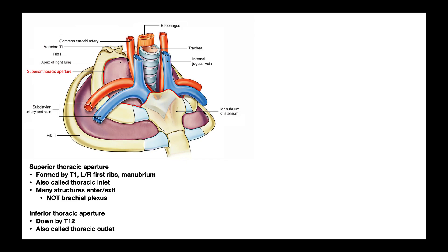Posteriorally, it's the body of the T1 vertebra. Laterally we have the first ribs on either side — this one would be the patient's right first rib — and then basically the top of the sternum, which is the manubrium. And over here would be the left first rib. This makes up a space called the superior thoracic aperture, also called the thoracic inlet.